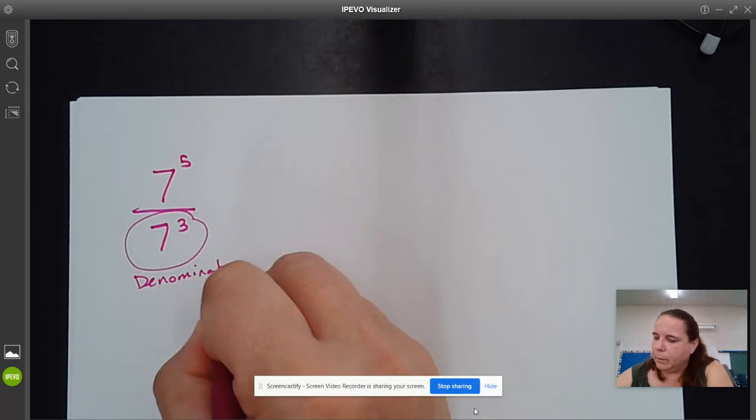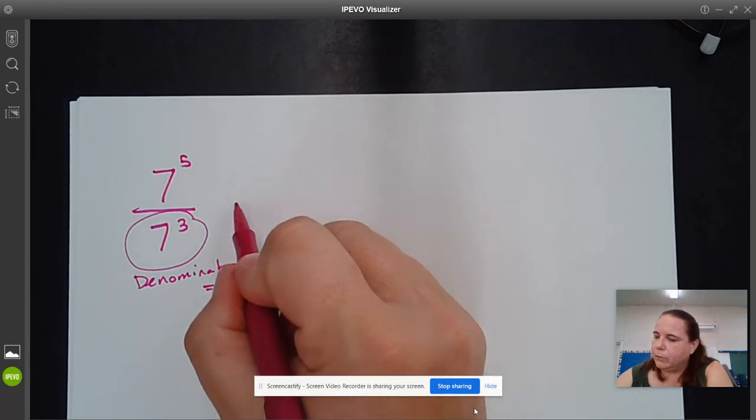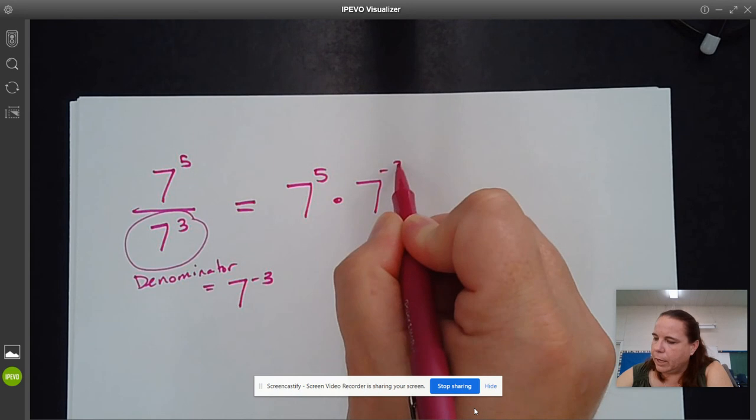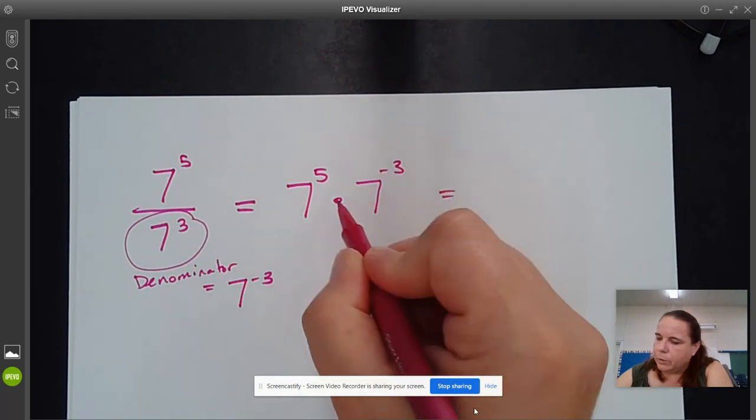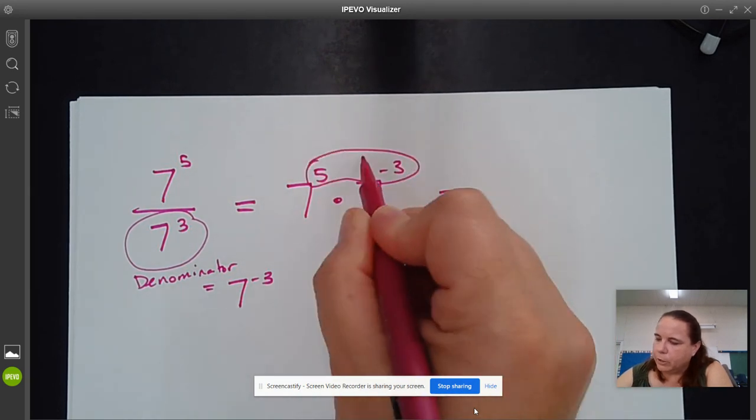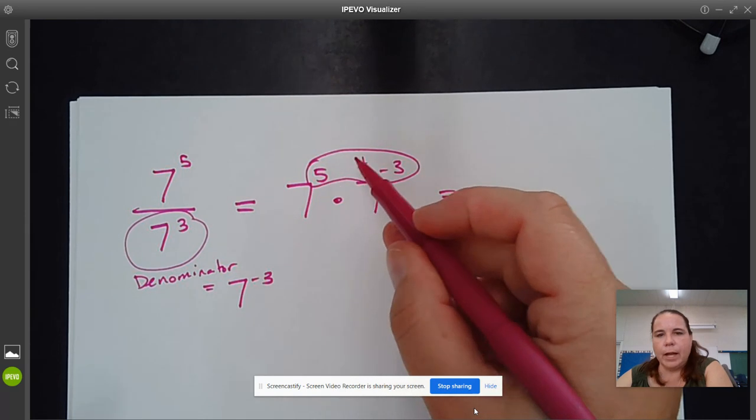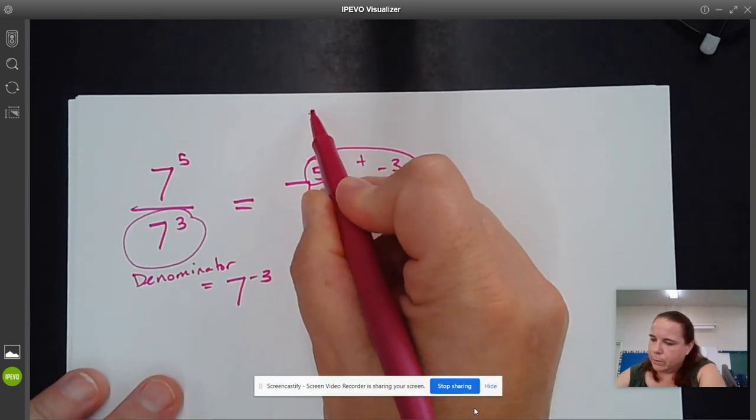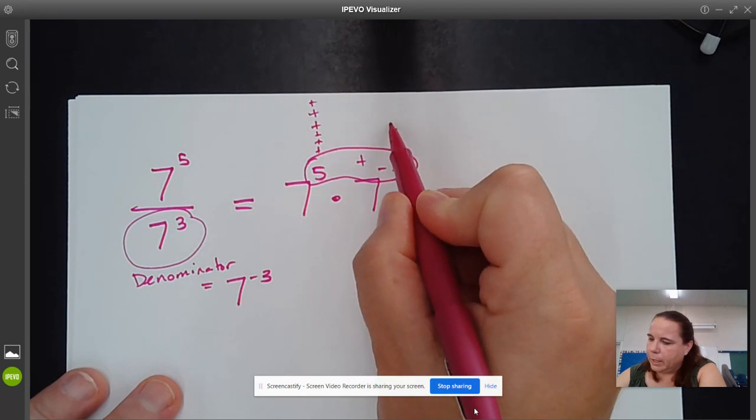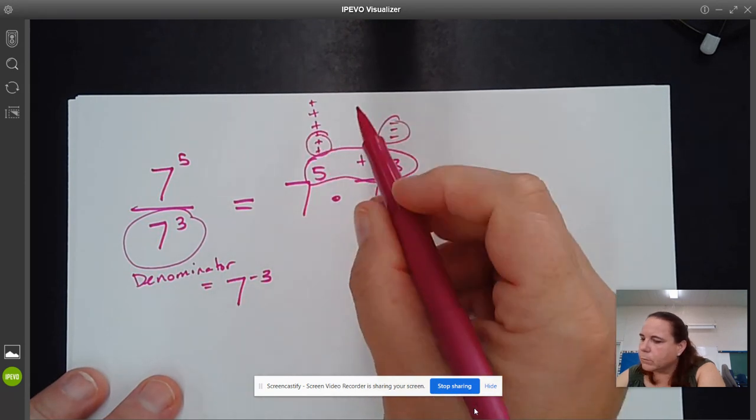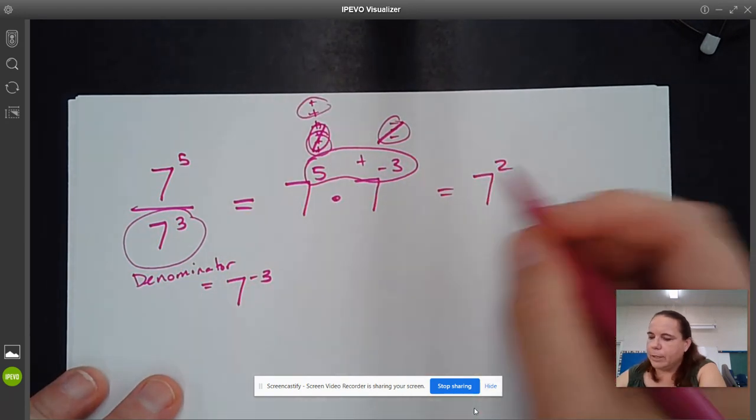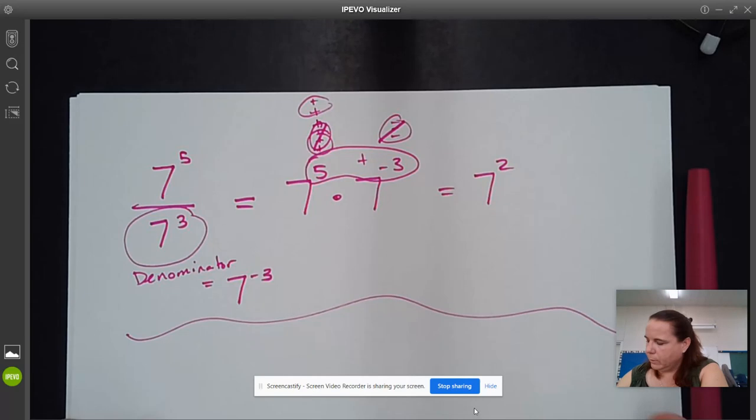It's equivalent to 7^(-3). So we could have changed this to 7^5 times 7^(-3). And now that we're multiplying, we can just add those. So 5 positives plus 3 negatives - these cancel, and you're left with 2. So 7^2, the same answer.